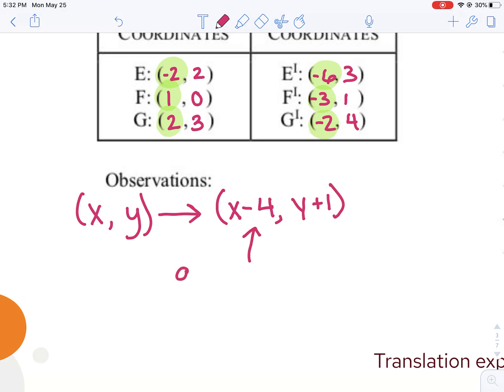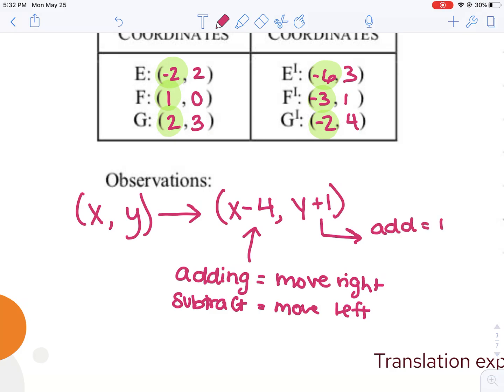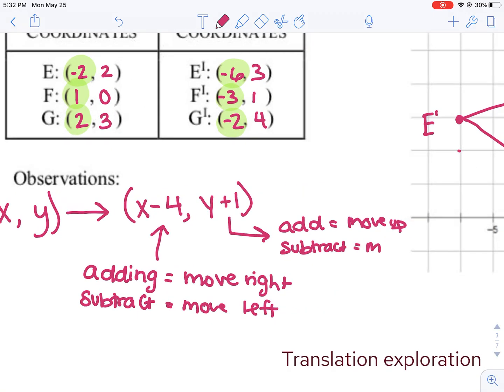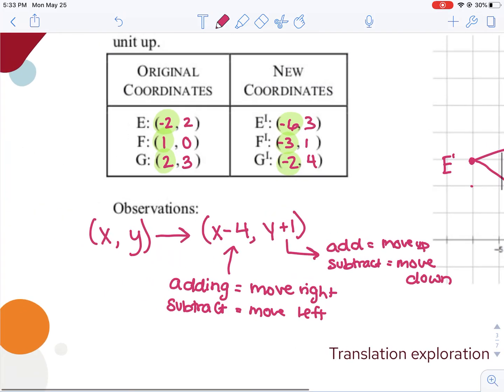When I'm doing a transformation, my rule is going to be X plus or minus something, Y plus or minus something. Whatever I'm adding here, if I'm adding, that means I'm moving to the right, subtracting moves to the left. Similarly, if I add to my Y value, I'm moving up. If I subtract, I'm moving down. So I can tell just based on the rule what I need to add or subtract to each coordinate.